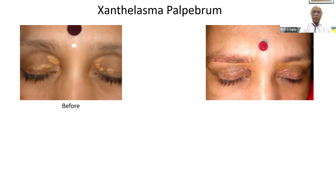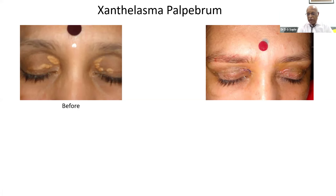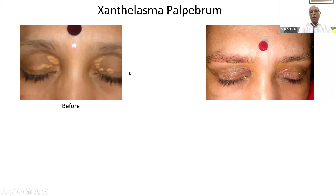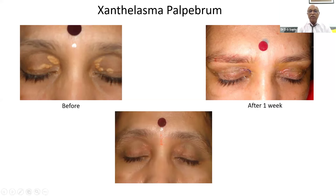In xanthelasma, always rule out blood sugar, blood pressure, and cardiac involvement. Control diabetes, control hypertension, and look for dyslipidemia. Sometimes cholesterol is normal but there is hypersensitivity to cholesterol. Control cholesterol first, then surgery can give excellent results. We have followed a patient for five years with no recurrence using this treatment protocol. Doing only surgery frequently leads to recurrence within six months.